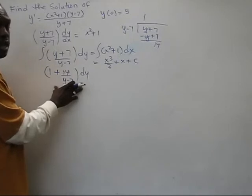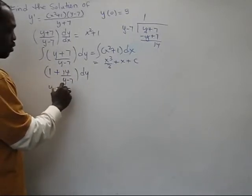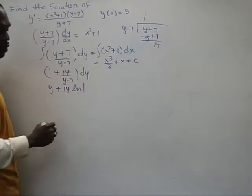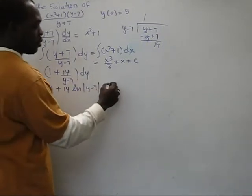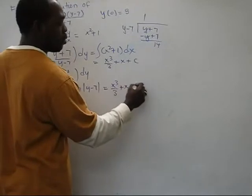This integrates to Y plus 14 times the natural log of Y minus 7 equals X cubed over 3 plus X plus C.